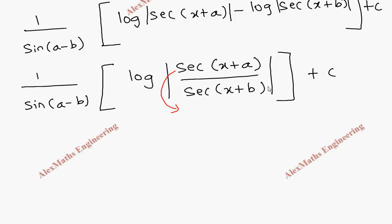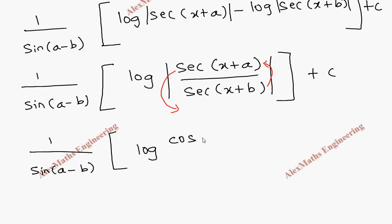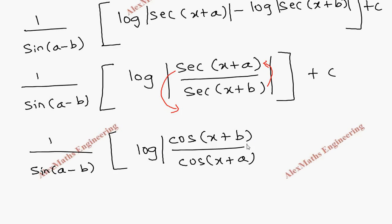Plus C. If we want, we can write in terms of the cosine form by taking sec(x+b) to the numerator as cos(x+b) and sec(x+a) to the denominator as cos(x+a), since secant is 1/cos. So the final answer is (1/sin(a-b)) times log|cos(x+b) / cos(x+a)| plus C.